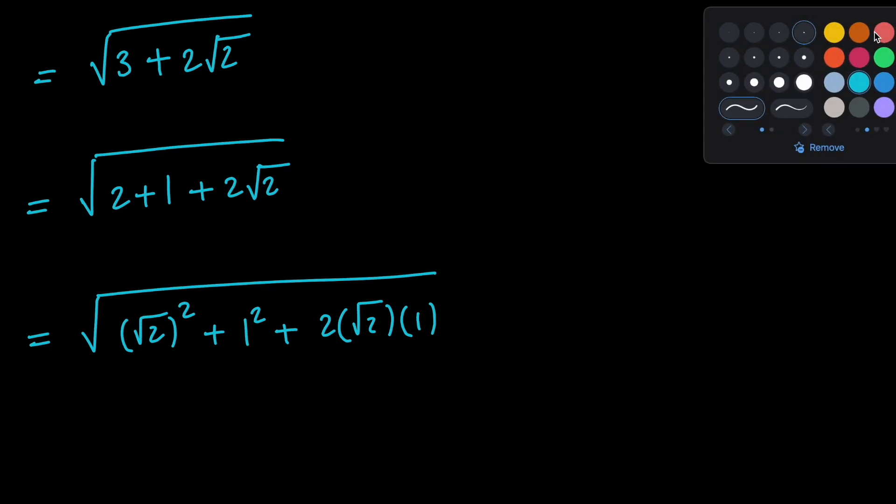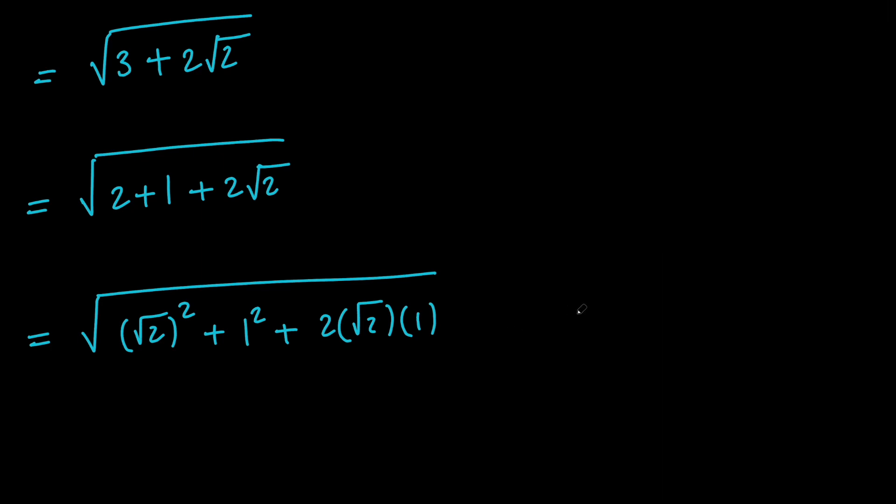Now, notice that the expression in the form of a² + b² + 2ab is a perfect square, which equals (a + b)². So if you compare these two, you can see that the expression under the square root is a perfect square.